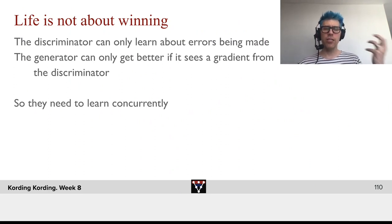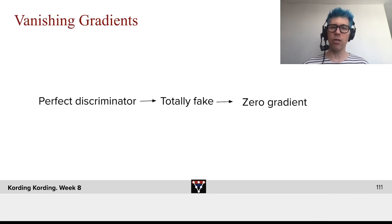If you want, the generator can only learn to not make the mistakes that the discriminator knows about. But the discriminator can only learn about the mistakes being made by the generator actually making those mistakes. They need to learn concurrently.